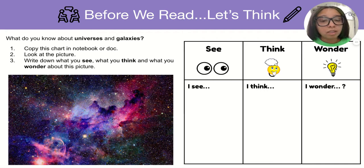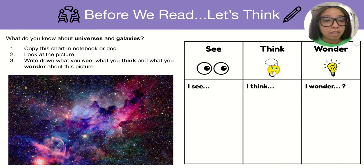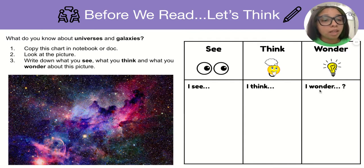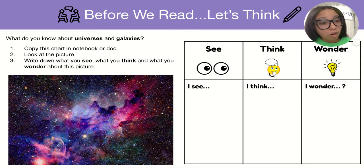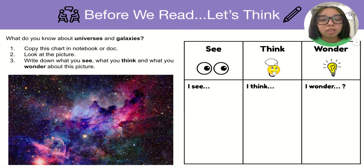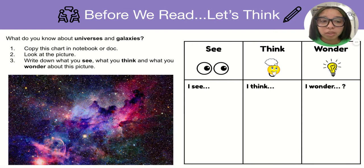In the column that says 'See,' you can start your answers by writing 'I see.' In the column that says 'Think,' you can start your answers with 'I think.' And in the column that says 'Wonder,' you can write questions using the five W's — who, what, where, when, why — or the one H, how. Or you can start your answer with 'I wonder,' using a question mark to end the question.